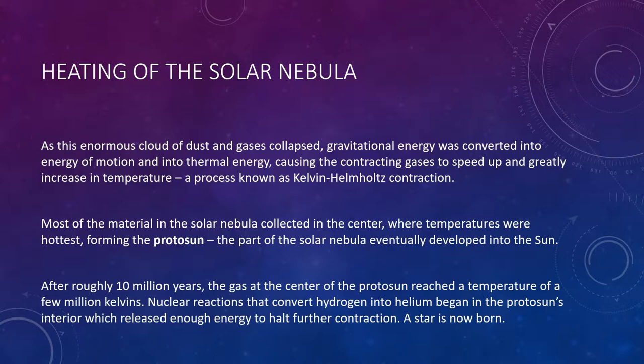As an analogy, when you drop a ball, Earth's gravitational attraction makes it fall faster and faster—just like matter falling into the center of the solar nebula. Most of the material in the solar nebula collected in the center, where temperatures were hottest, forming the protosun—the part of the solar nebula that would eventually develop into our sun.